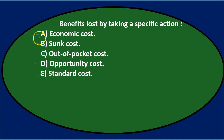Of the remaining three — economic cost, sunk cost, and opportunity cost — economic cost isn't what we typically call this. Sunk cost and opportunity cost are the two costs most important to consider in managerial accounting, as they're often overlooked. Between those two, we're looking for the one that describes benefits lost by taking a specific action, which points to opportunity cost. You might try to argue for economic cost since sunk cost and opportunity cost are studied in economics, but opportunity cost is the more specific and correct answer here.